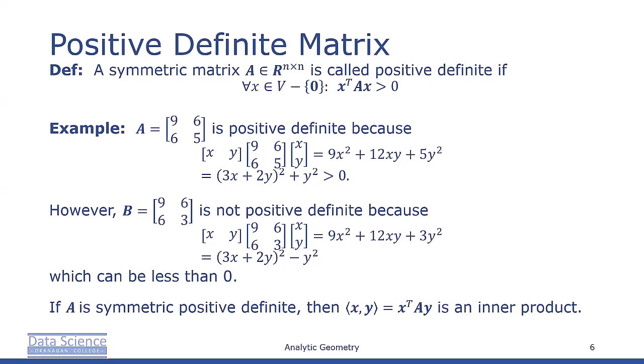Symmetric positive definite matrices play an important role in machine learning, especially in the context of matrix decompositions. A symmetric matrix A, which is n by n, is called positive definite if for every x in our vector space V, excluding the zero vector, x transpose A x is greater than zero.